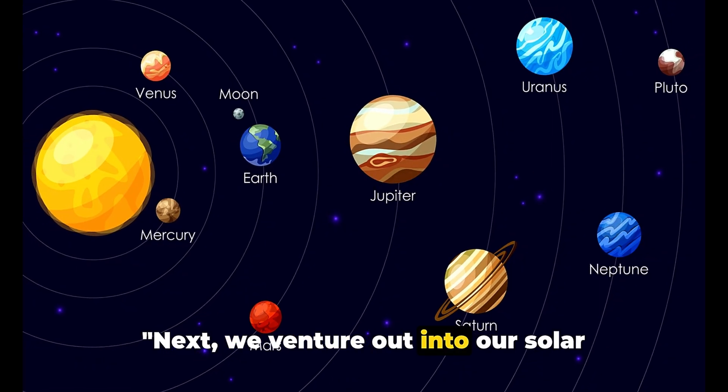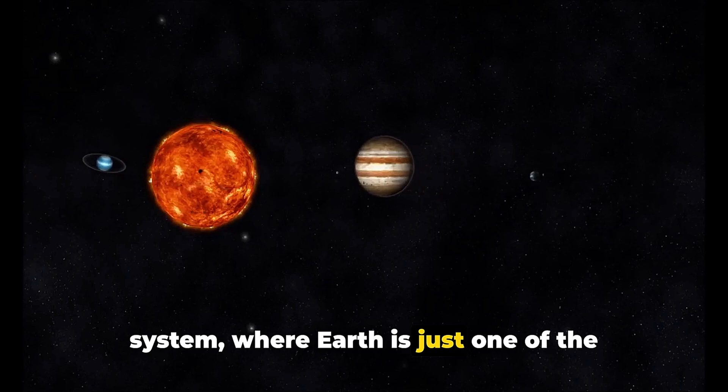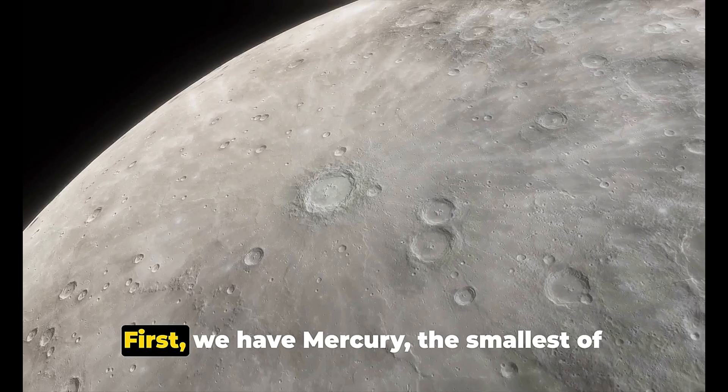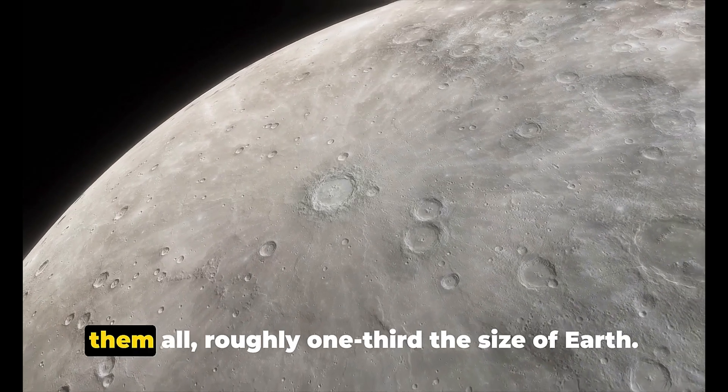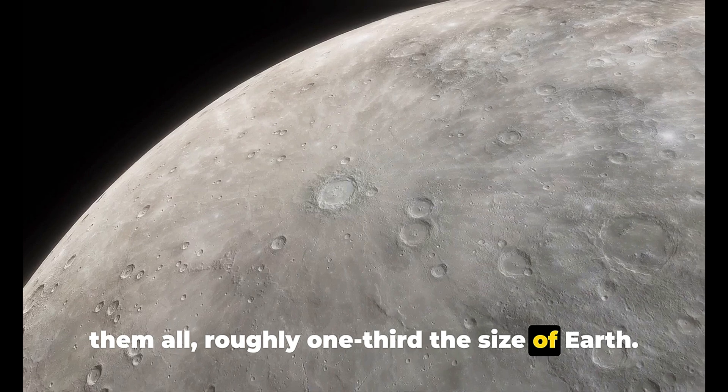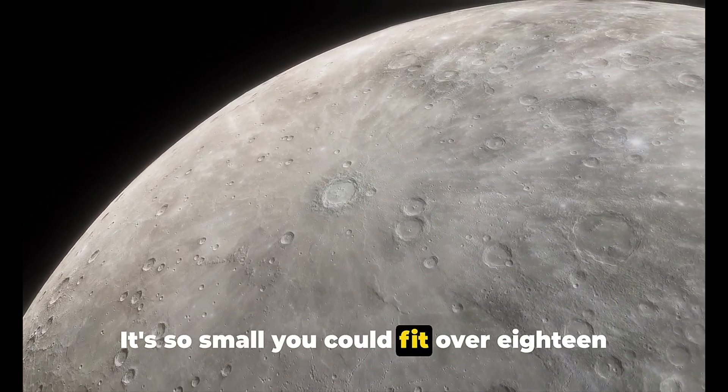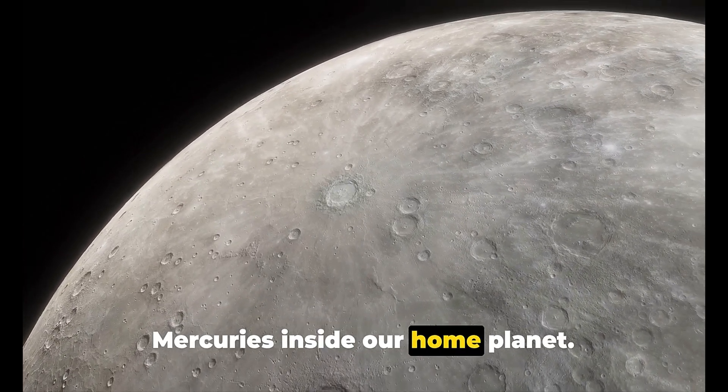Next, we venture out into our solar system, where Earth is just one of the eight planets. First, we have Mercury, the smallest of them all, roughly one-third the size of Earth. It's so small you could fit over 18 Mercuries inside our home planet.